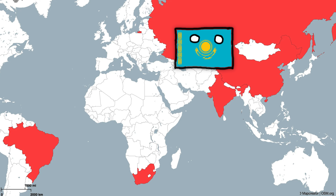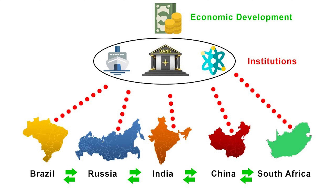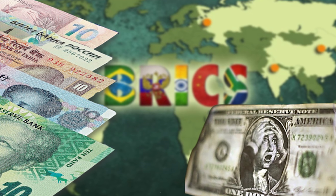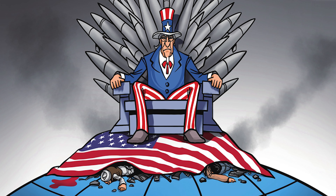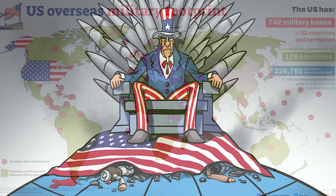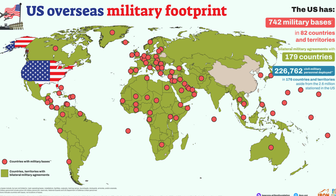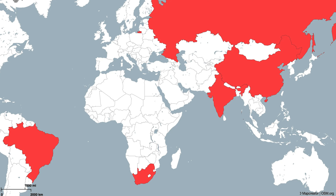BRIC is basically an international organization where a bunch of huge global powers are trying to create a loose alliance meant to counter the hegemony of the US dollar. Since the US has so much influence, so many military bases, and the US dollar is the exchange currency of the world, these BRIC nations are trying to counter that and create a more multipolar world.